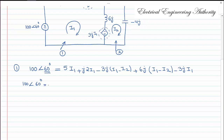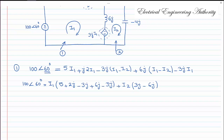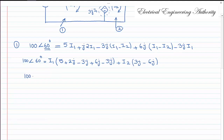Simplifying the first equation by collecting coefficients: for I1 we have 5 + 2j, then −3j, +3j, and −3j; for I2 we have +3j and −6j. The terms cancel and the first equation becomes: 100∠60° = (5 + 2j)·I1 − 3j·I2.